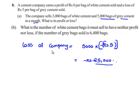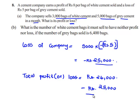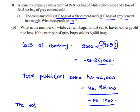The total profit or loss of the company equals the profit gained by selling 3,000 bags of white cement, which is Rs.24,000, added with the loss from selling 5,000 bags of grey cement, which is minus Rs.25,000. Therefore, the total profit or loss is equals to minus Rs.1,000. Since it bears a negative sign, it is a loss. Therefore, the total loss of the company is Rs.1,000.